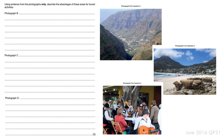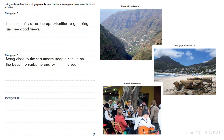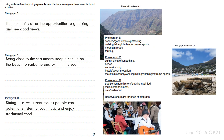Here are three photographs with three responses describing the advantages of these areas for tourist activities. The mountain offers opportunities to go hiking and see good views. Being close to the sea means people can lie on the beach to sunbathe and swim. Sitting at the restaurants means people can listen to local music and enjoy traditional food. Aim for at least two points per resource.